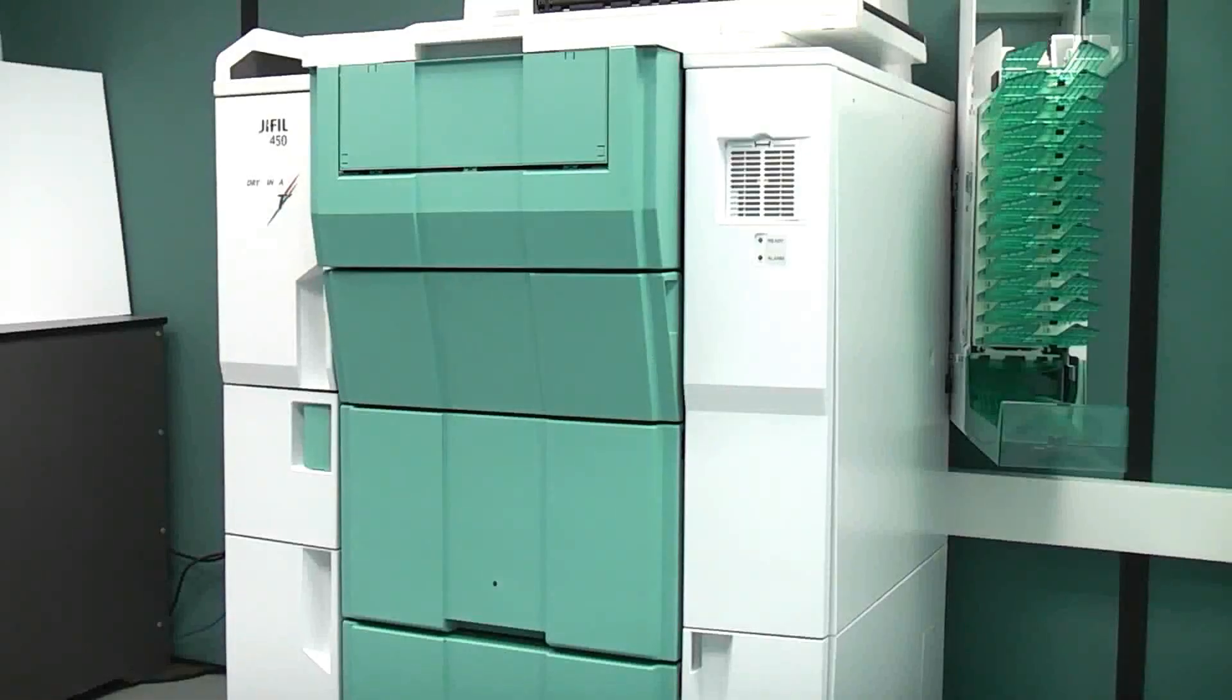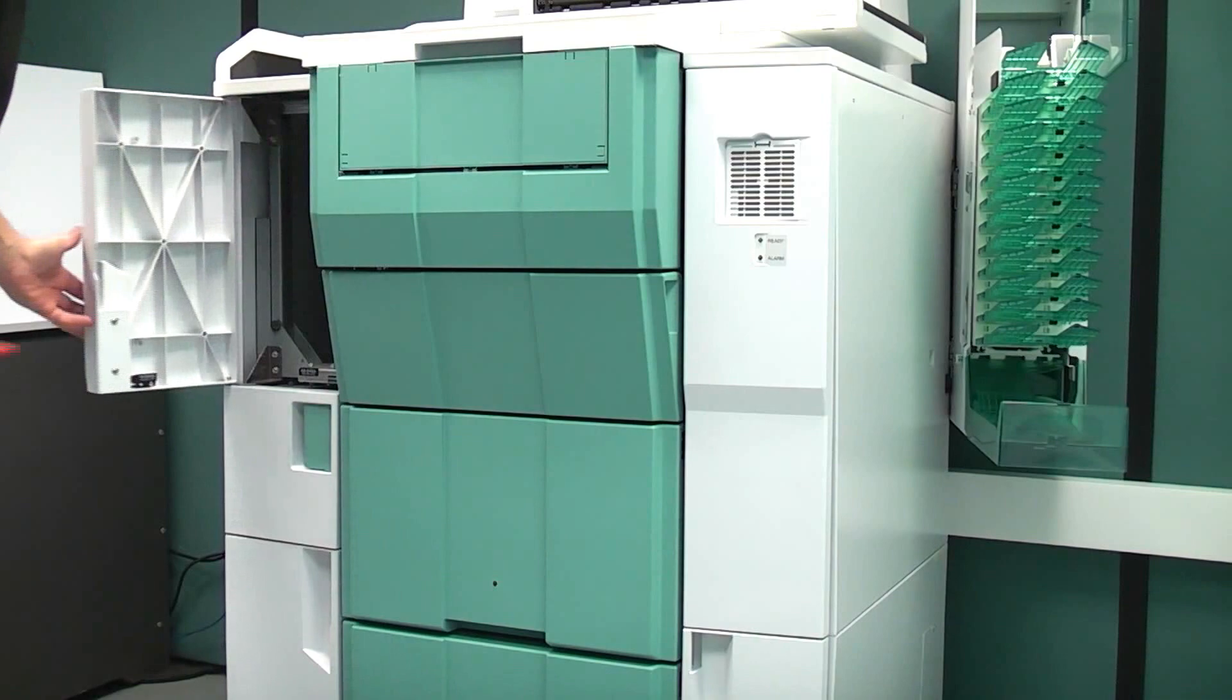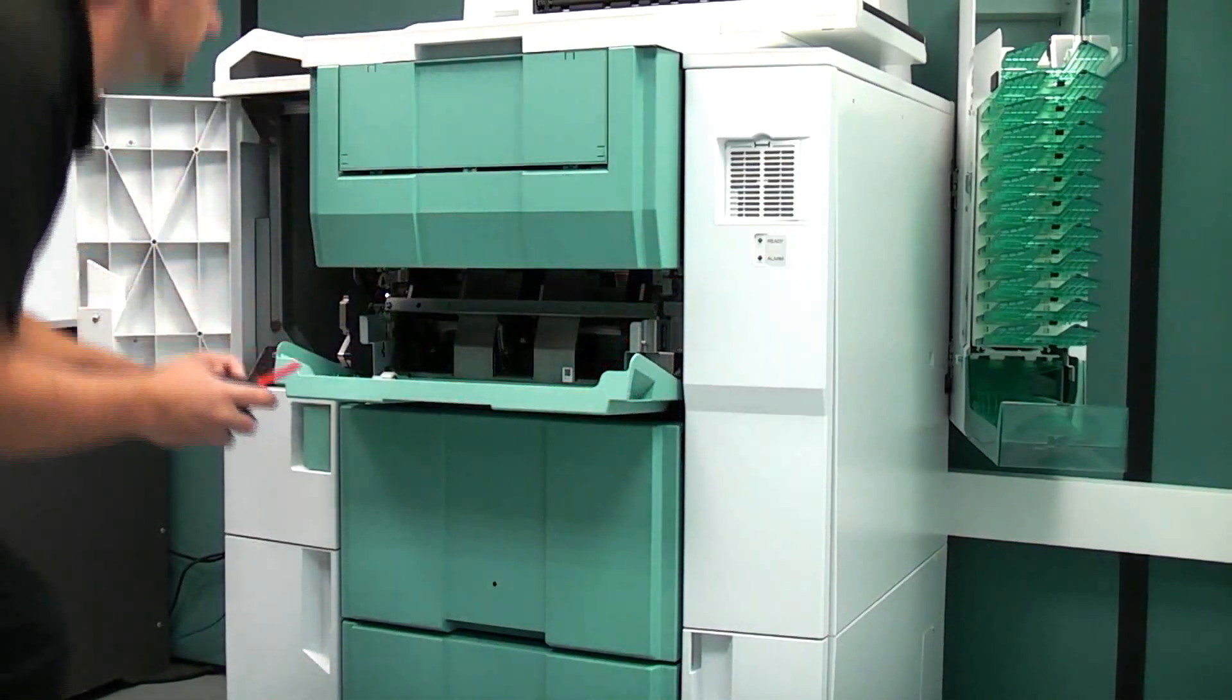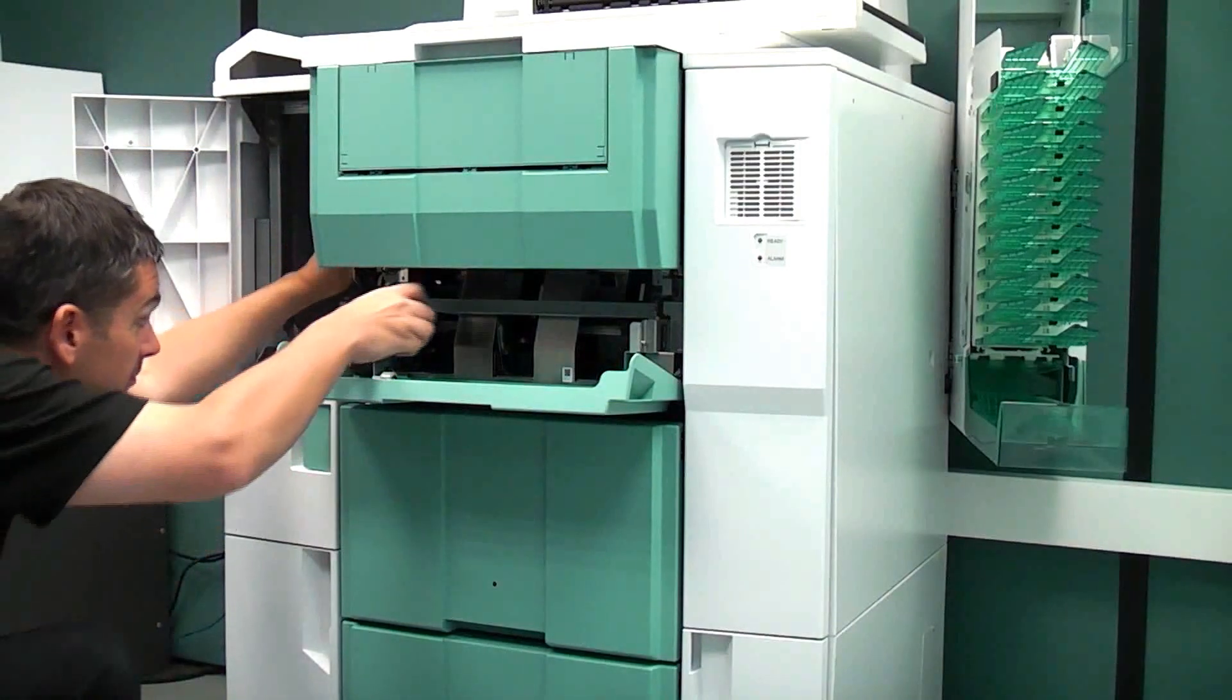Cleaning the advance grid roller. Open the maintenance door and the paper guide door and pull out the sheet supply cover. Turn the blue knob and clean all around the advance grid roller with a blower brush.